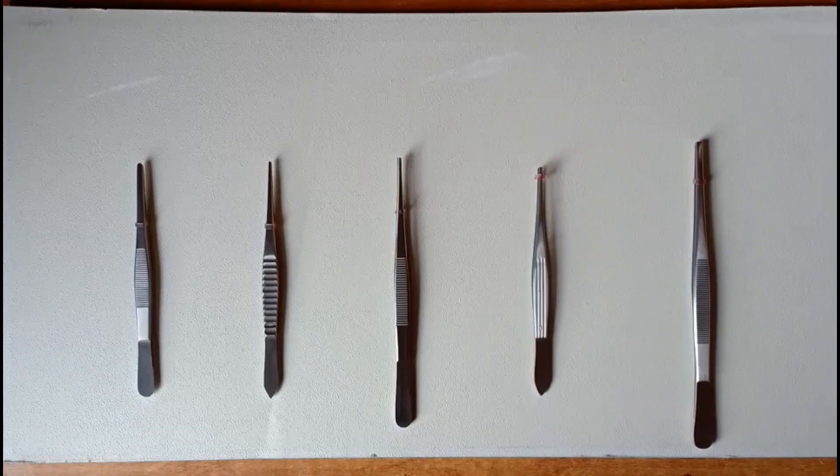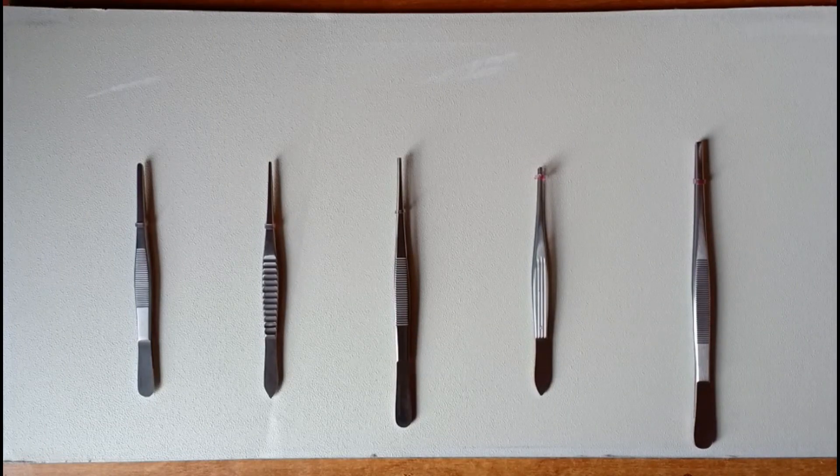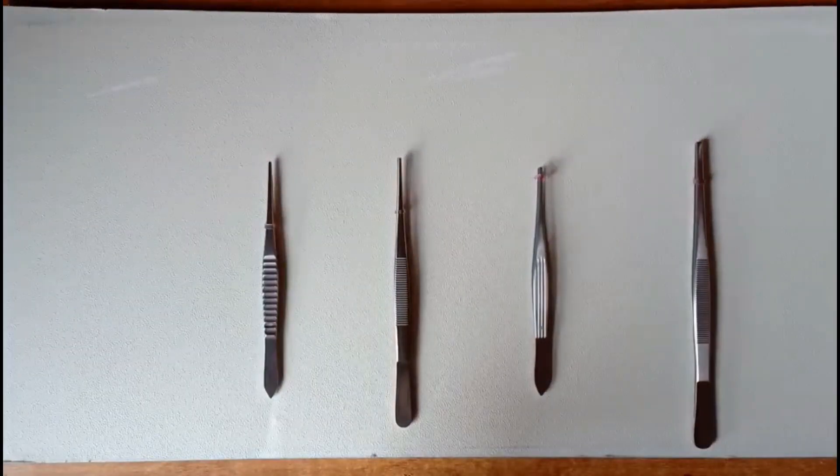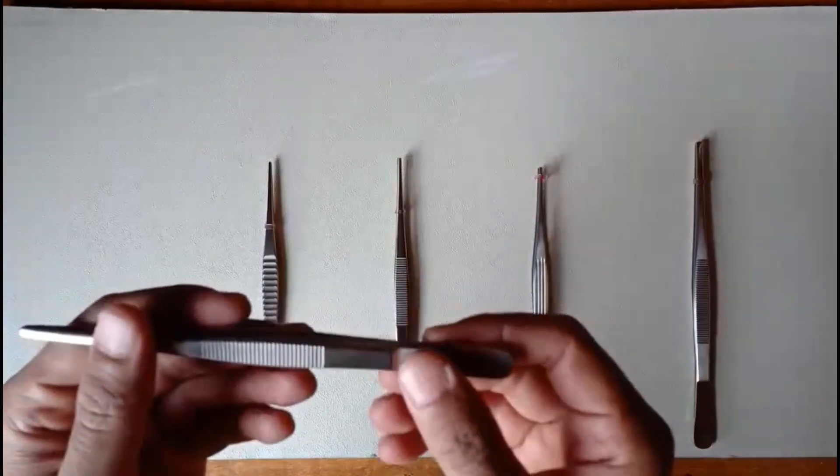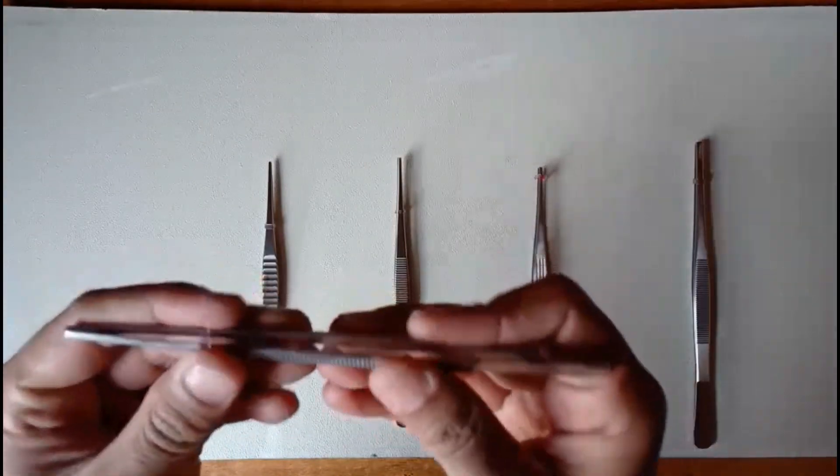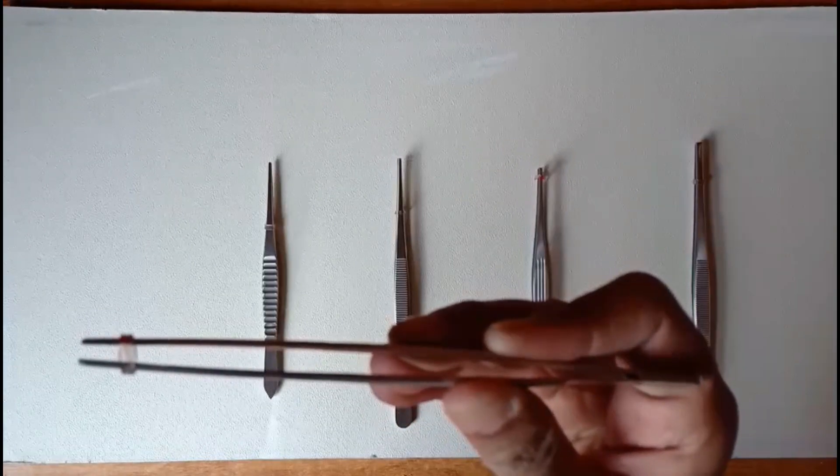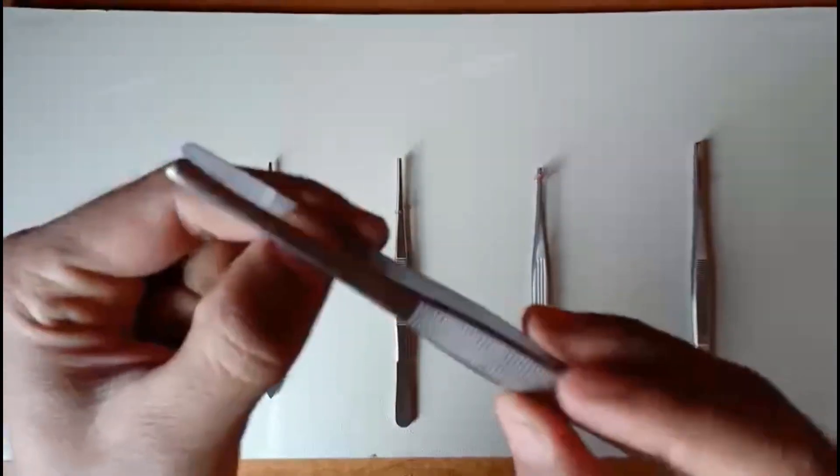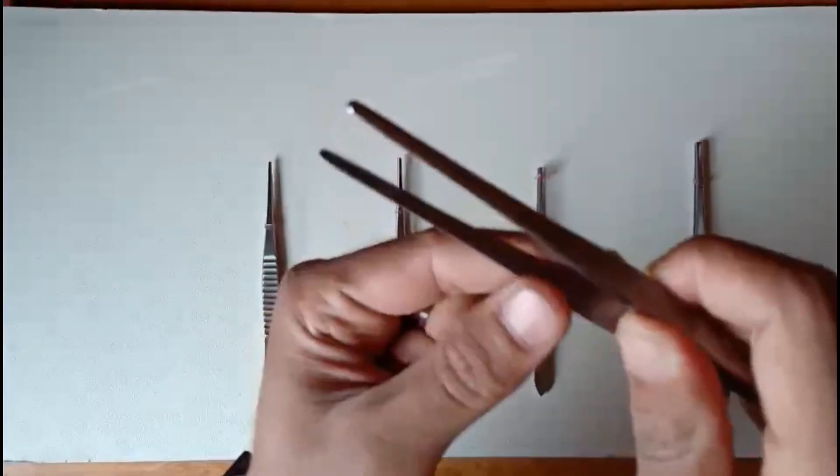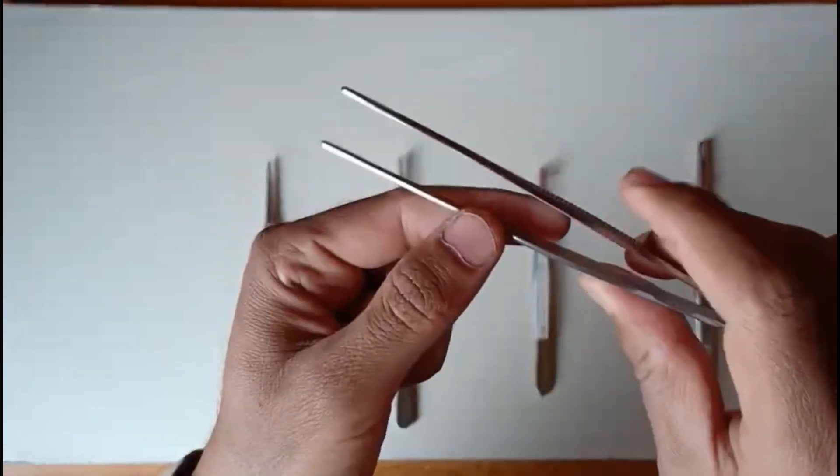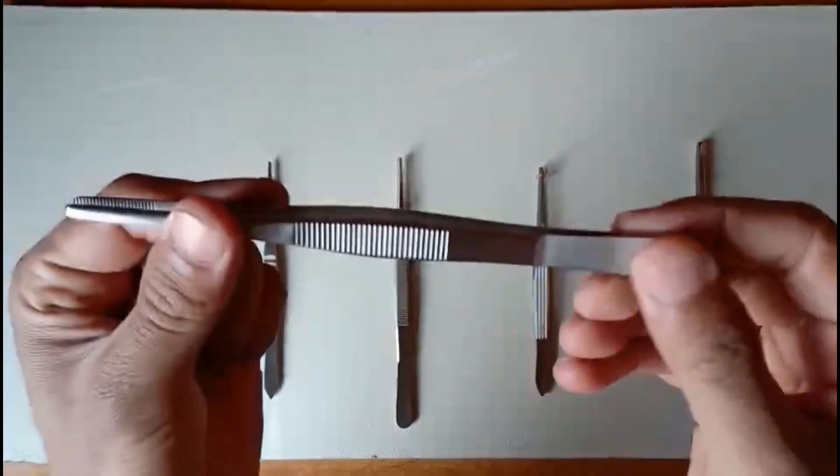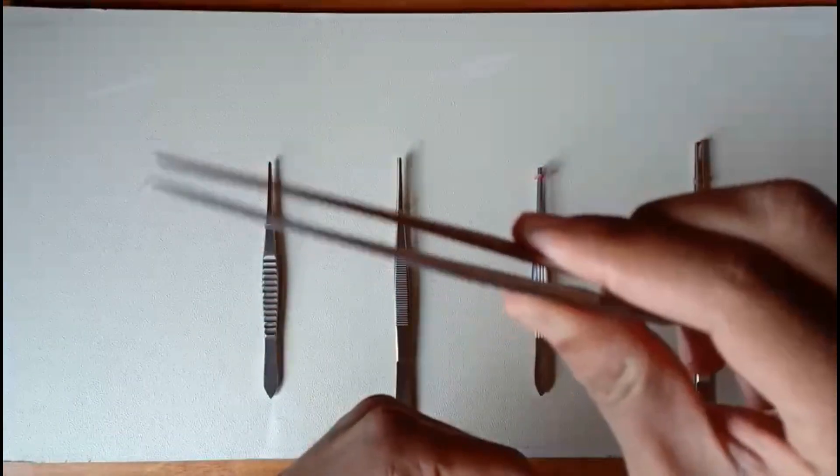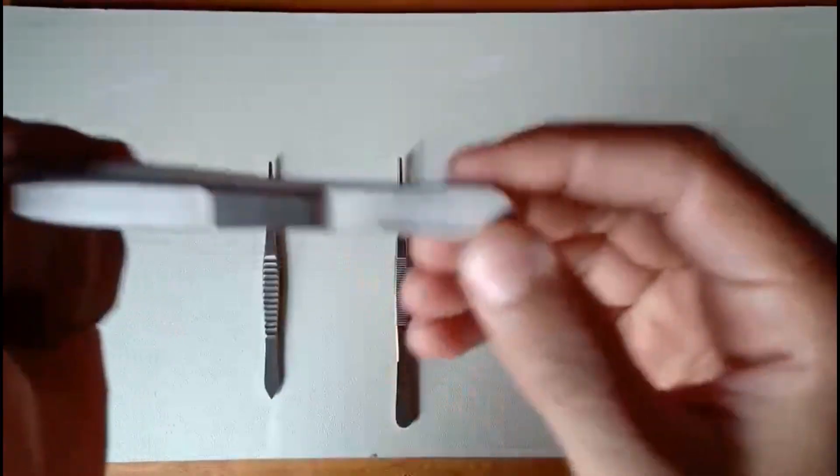You can find various types, qualities, and sizes. The first instrument I'm reviewing here is a standard pattern dissecting tissue forceps, made of high-grade stainless steel. You can check the serrations here, made of fine-grade material in the middle. The strength is very good.